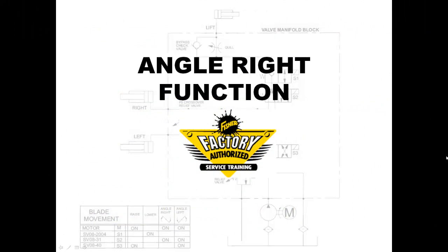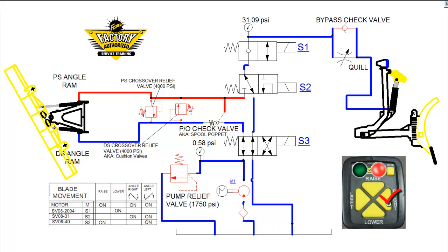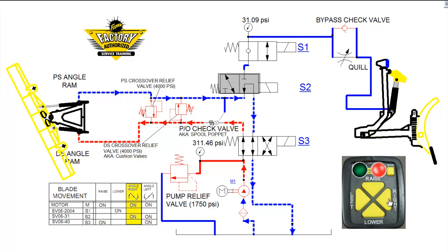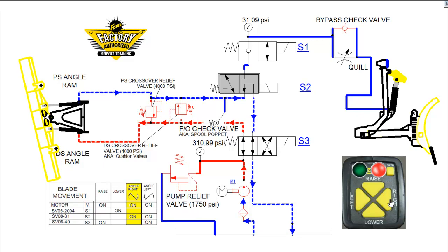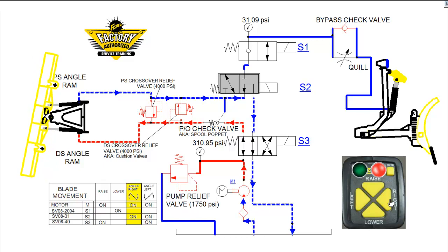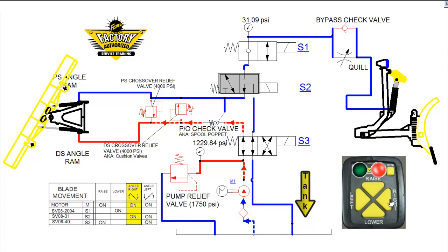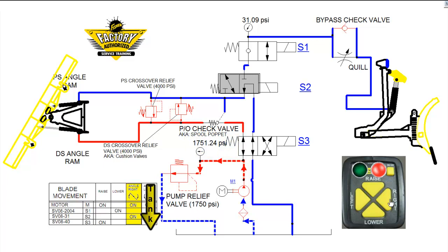We will now demonstrate the angle right function. Pressing the angle right button on the cab control activates the motor and the S2 cartridge valve. Hydraulic fluid flows through the unshifted S3 valve through the PO check valve, extending the driver side angle ram. The retracting passenger side ram forces returning hydraulic fluid through the shifted S2 valve, the unshifted S3 valve, and back to tank. When the blade is fully angled, pressure will build to the pump relief setting, and then bypass directly to tank.